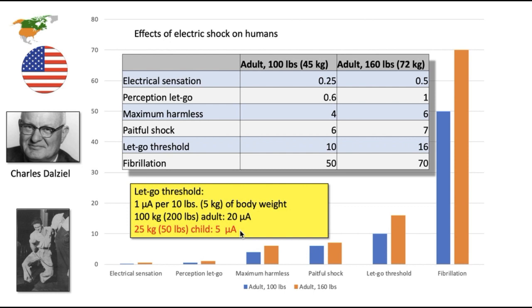Which also has another great consequence. If a child weighs, let's say, 15 kilos or 30 pounds, even a 5 milliamp GFCI or an RCD may not save that child.